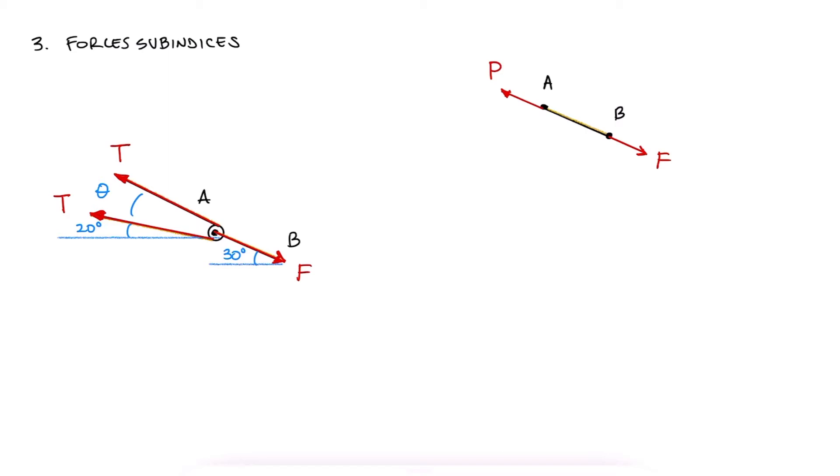a convention that will be very helpful for all future problems, especially when identifying if a member is in tension or compression, is using the subscripts to show the direction of the force. In this case, F from A to B, which is the external force F, will be labeled FAB.